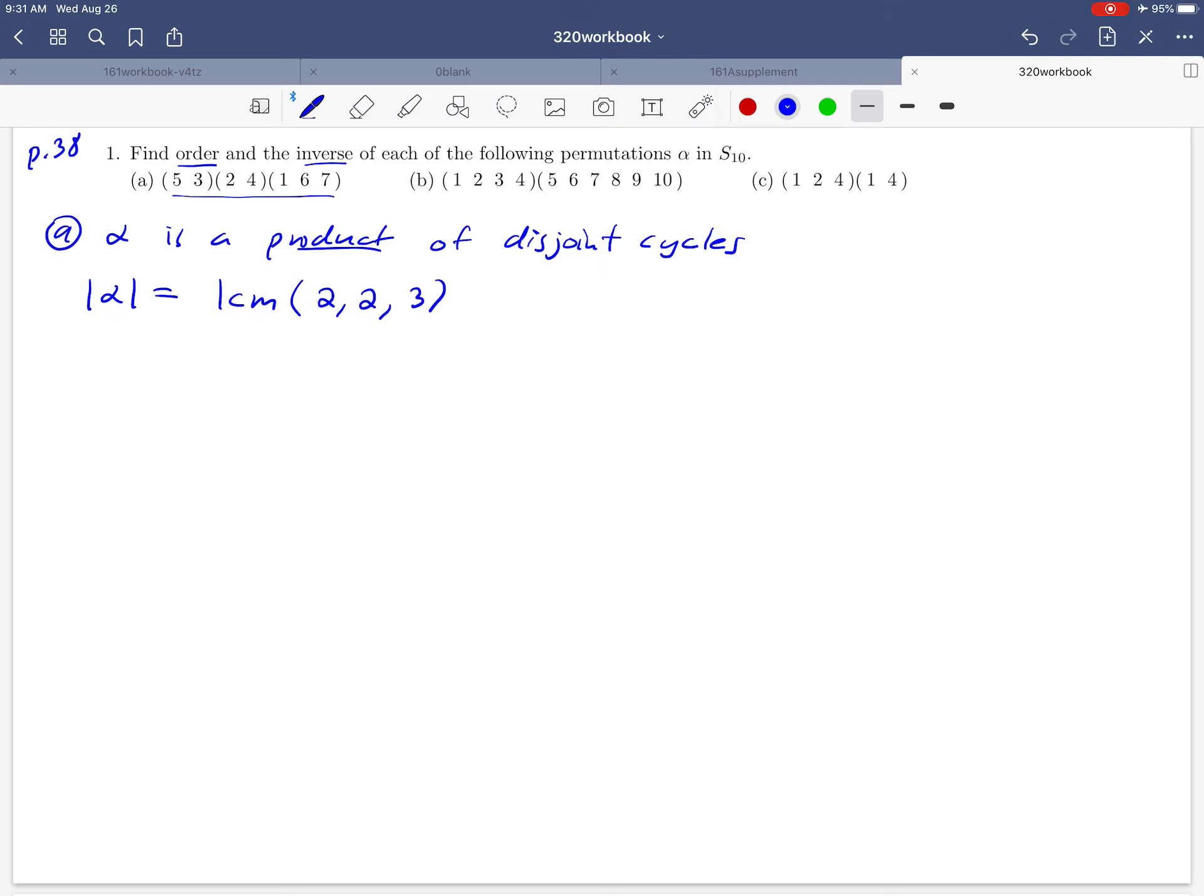Okay so we should get the least common multiple of 2, 2, and 3. Okay since those are the lengths of the three cycles, and then the question is what's the least common multiple of those three numbers. Think about it for a minute. Six is it.